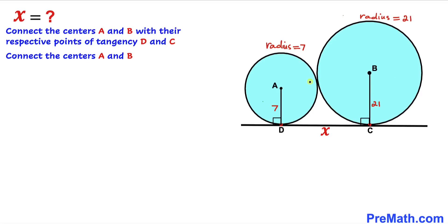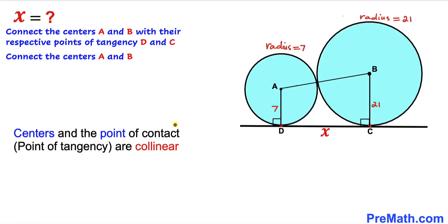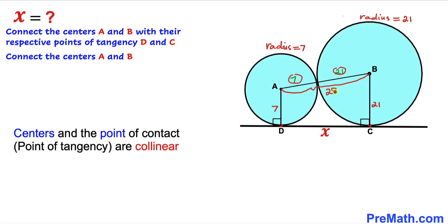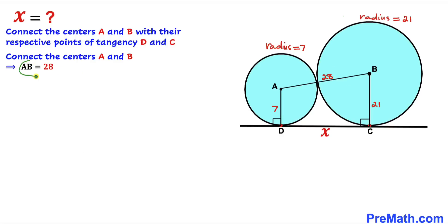Next, let's connect the centers A and B. We recall the fact that the centers and the point of tangency are collinear — center A, center B, and their point of tangency all lie on the very same line. The radius of the smaller circle is 7 units and the larger circle is 21 units, so the total distance AB is 7 plus 21, giving us 28 units.